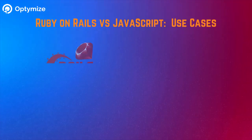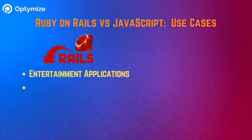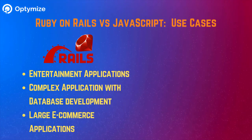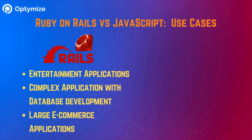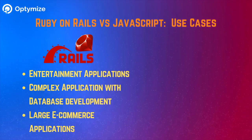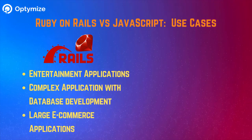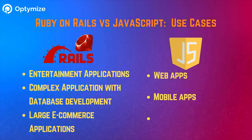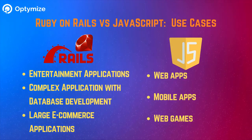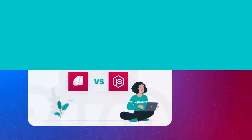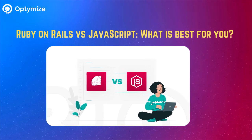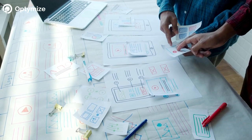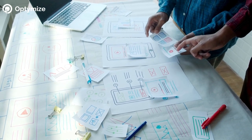Ruby on Rails vs JavaScript — use cases: Ruby on Rails is suited for entertainment applications, complex applications with database development, and large e-commerce applications. JavaScript is used for web apps, mobile apps, and web games.